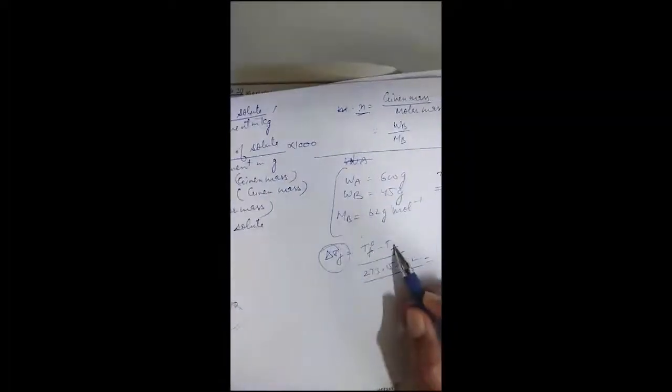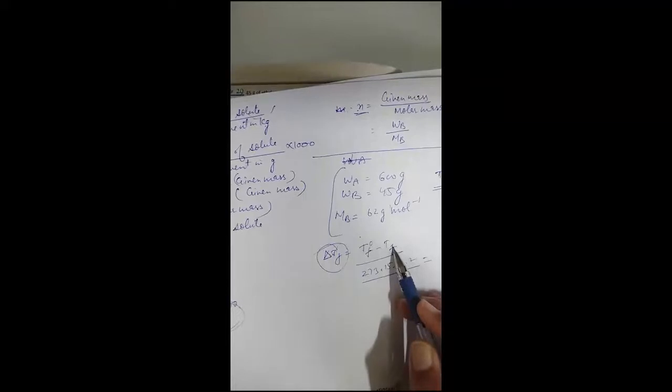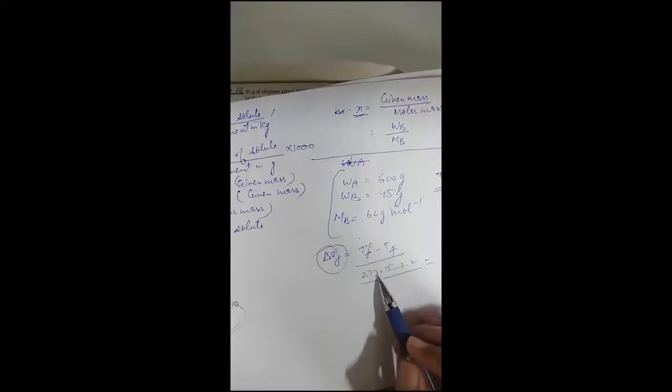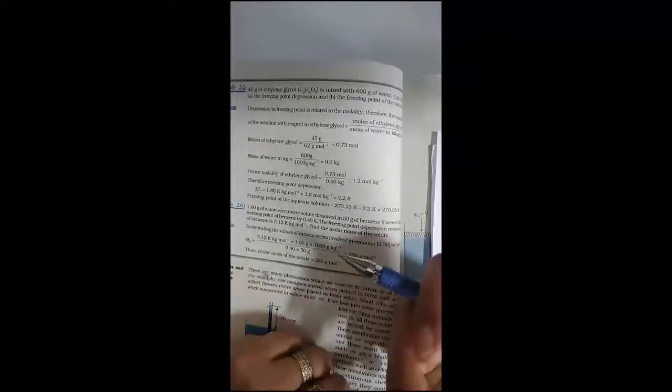Finding molality: number of moles of solute divided by mass of solvent. Then the freezing point depression delta Tf comes out to be 2.2 Kelvin. Since delta Tf = Tf° − Tf, and for water Tf° = 273.15 K, we get Tf = 273.15 − 2.2 = 270.95 Kelvin. In this way we can find out the freezing point of the solution and the delta Tf. Do practice these numericals, and if you have any problem you can ask me at any time. I will be ready to help you.